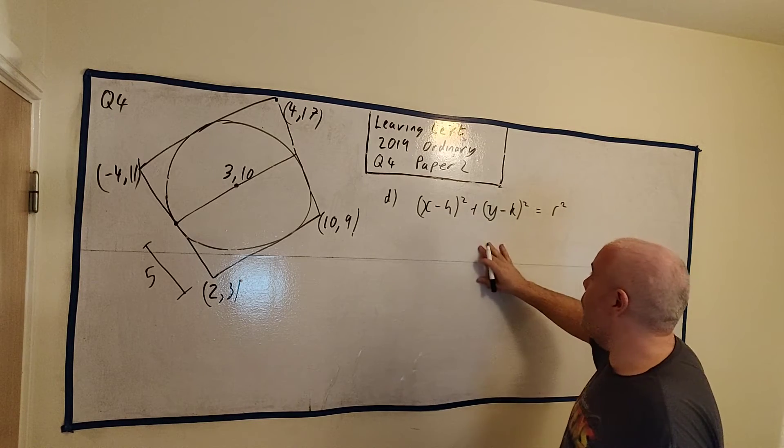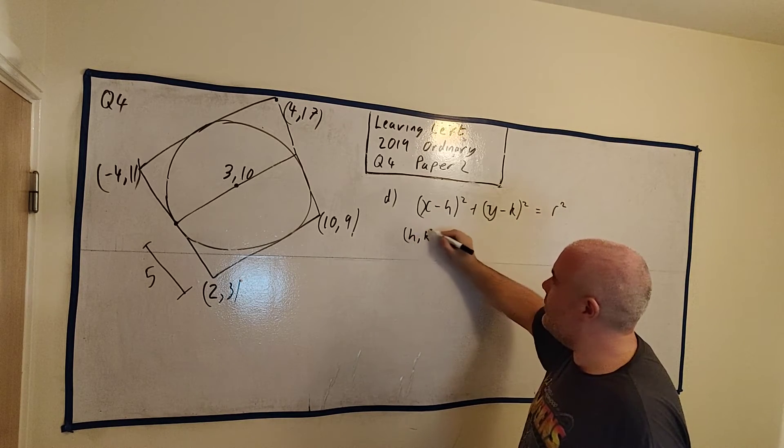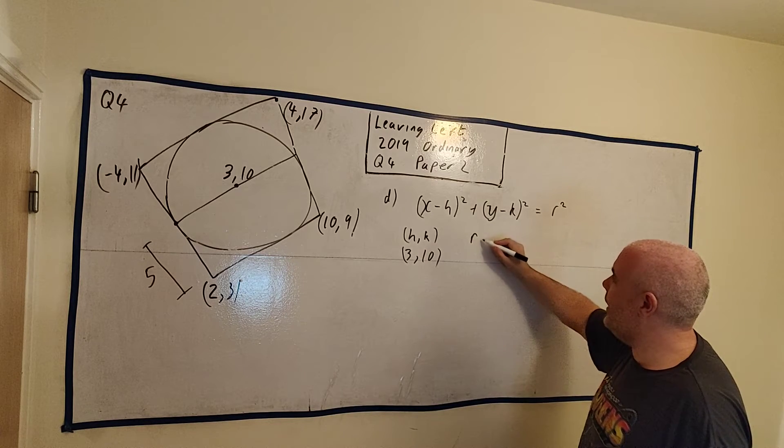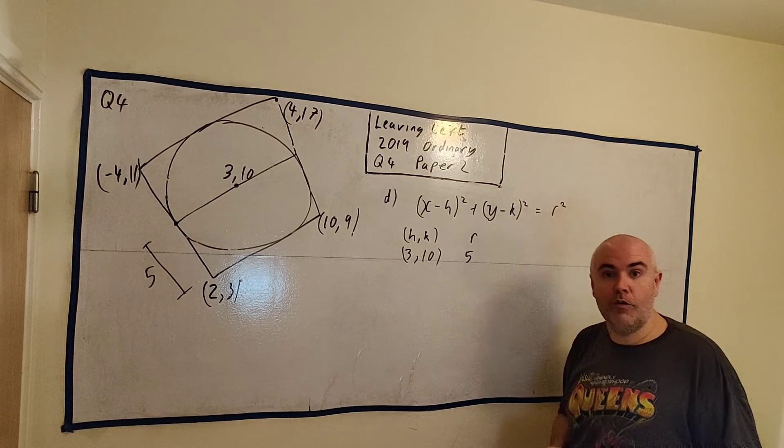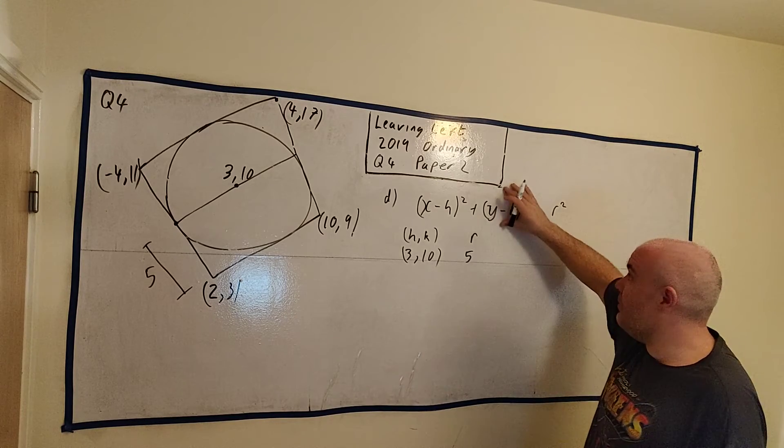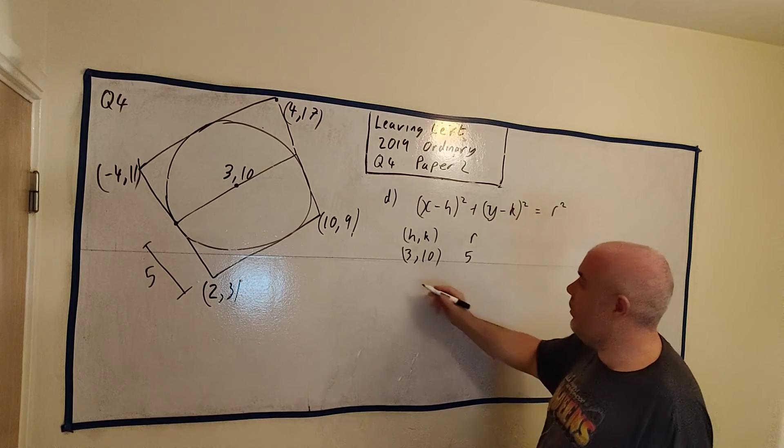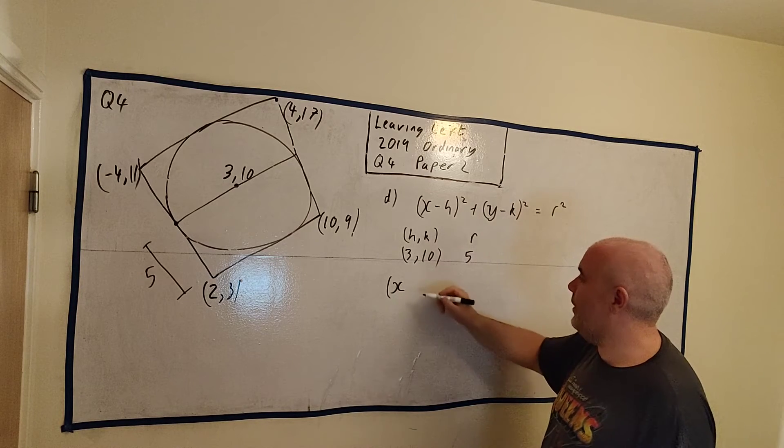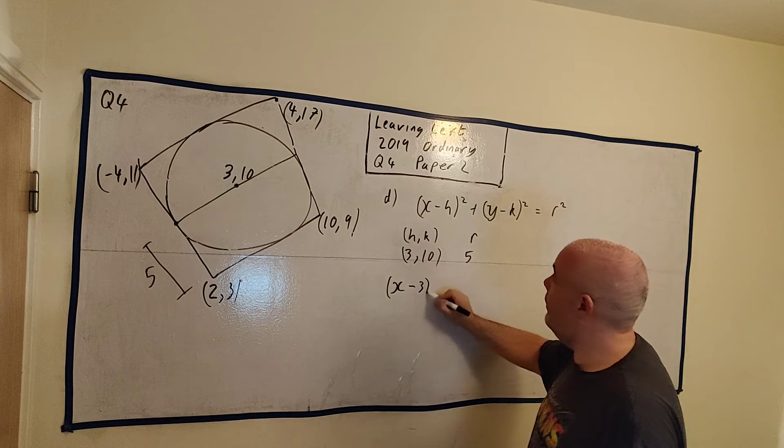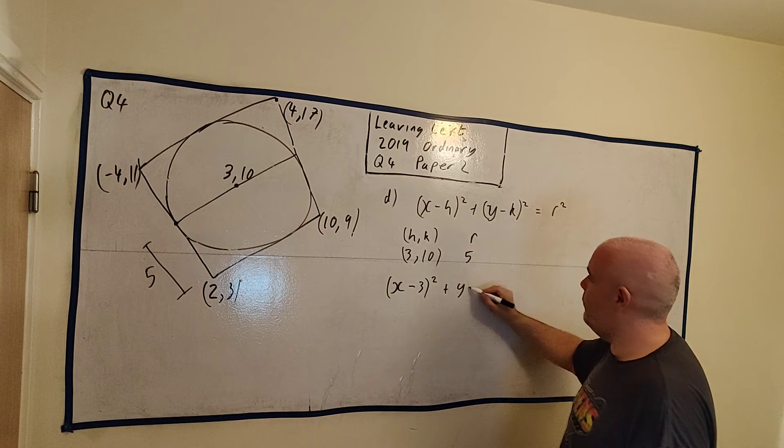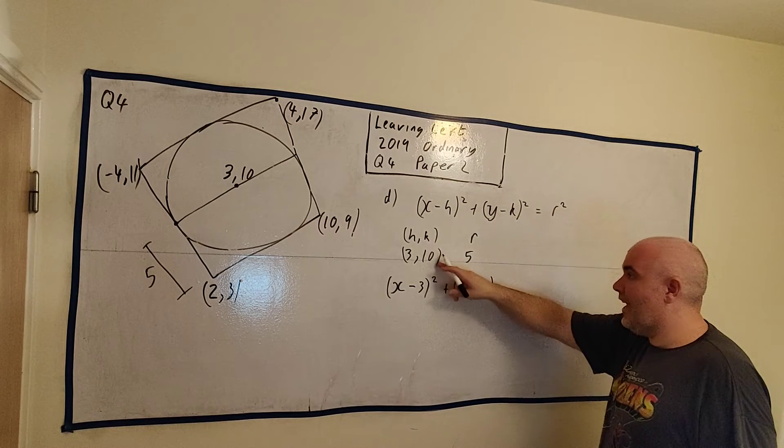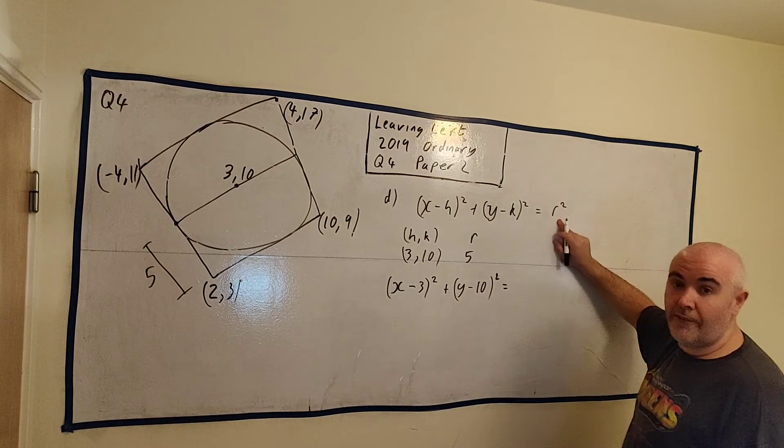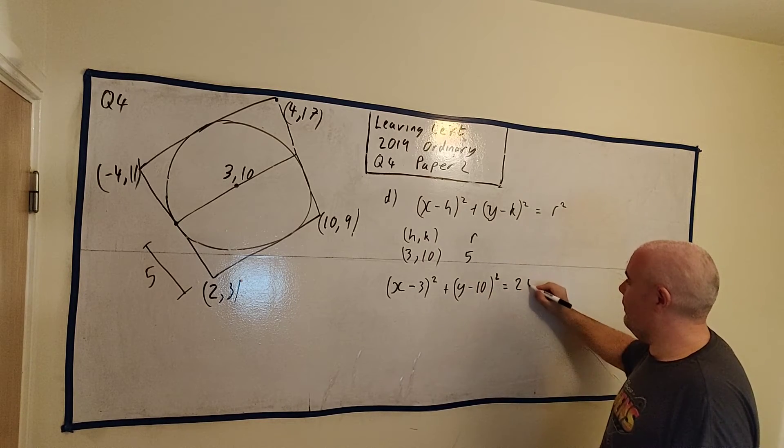Let's fill in some of these things we know. We know what h and k is. We know h and k is 3, 10. That's the center of the circle. We also know what r is. r is 5. So for the equation of the circle, it's really just to write it out again. x minus h - h is just 3 squared - plus y minus k, which is minus 10. Or k is 10, so minus 10 is minus 10. And that squared equals 5 squared. 5 squared is 25. That's our answer.